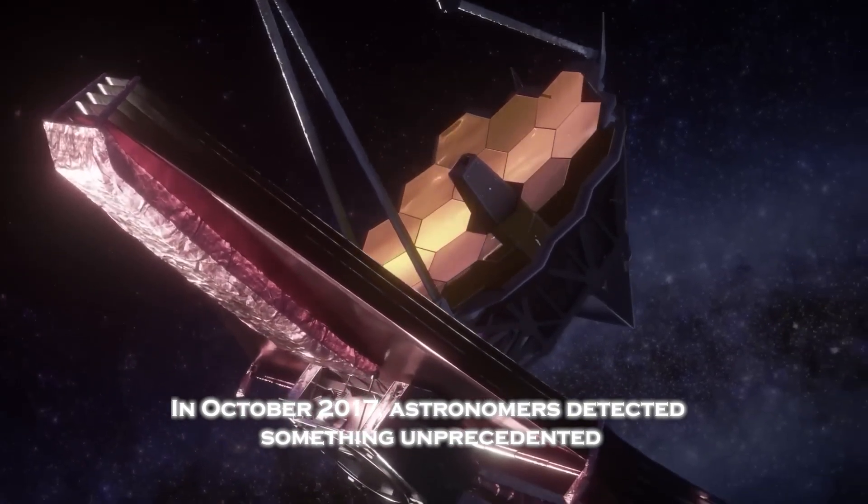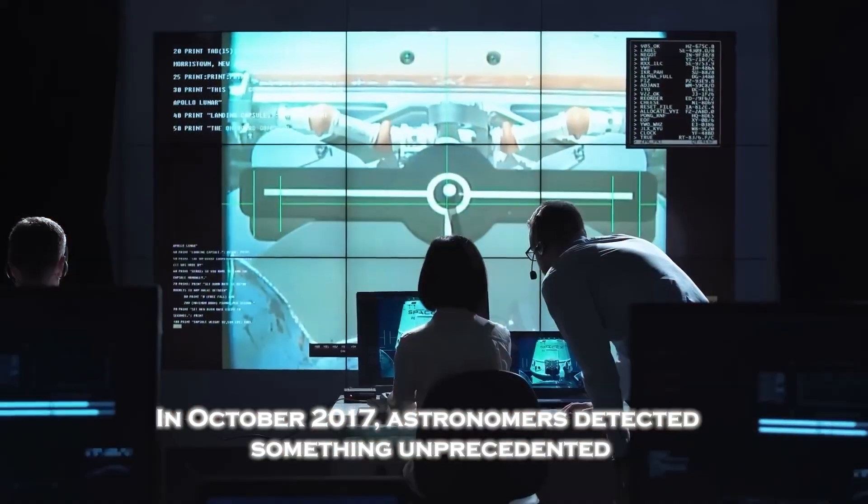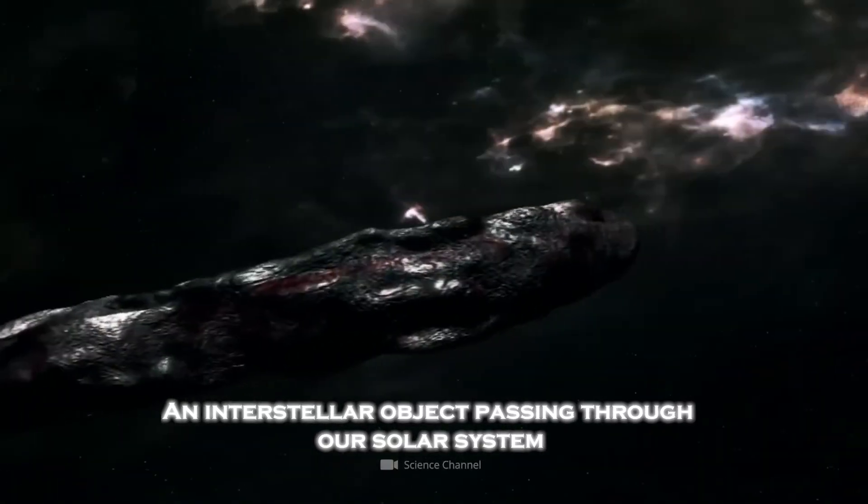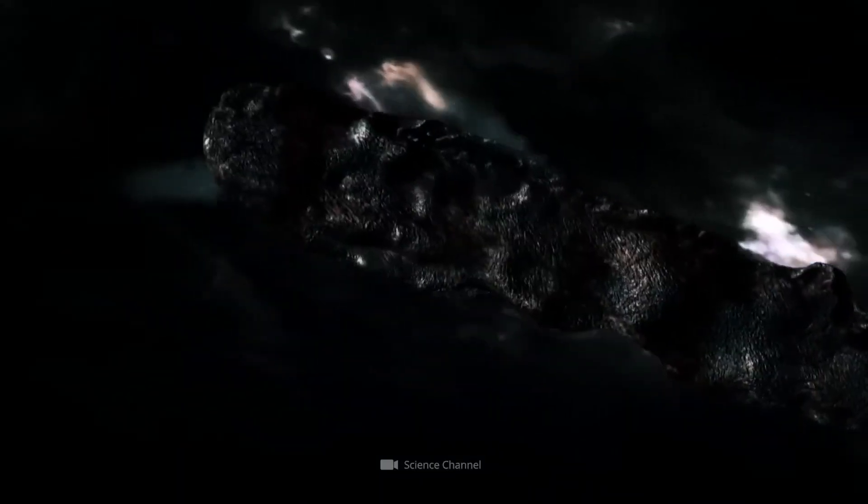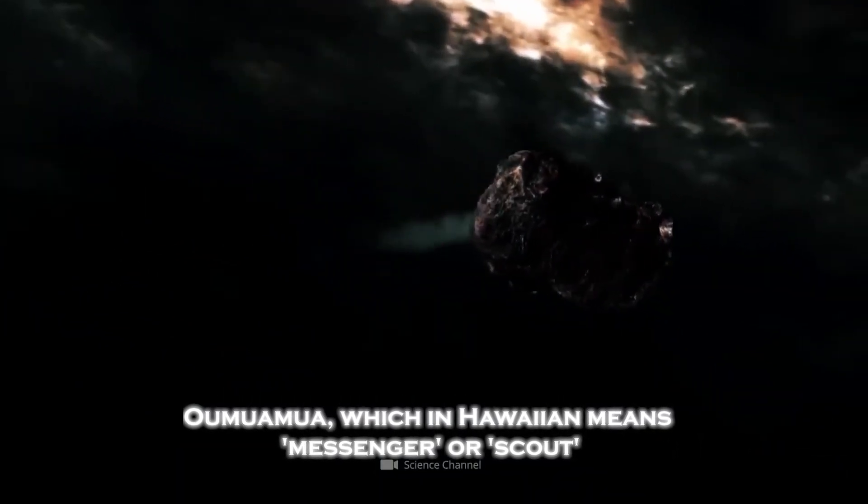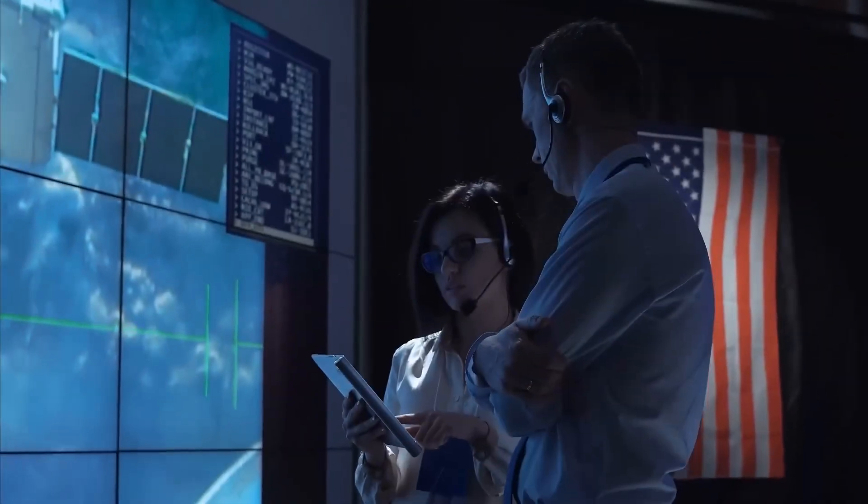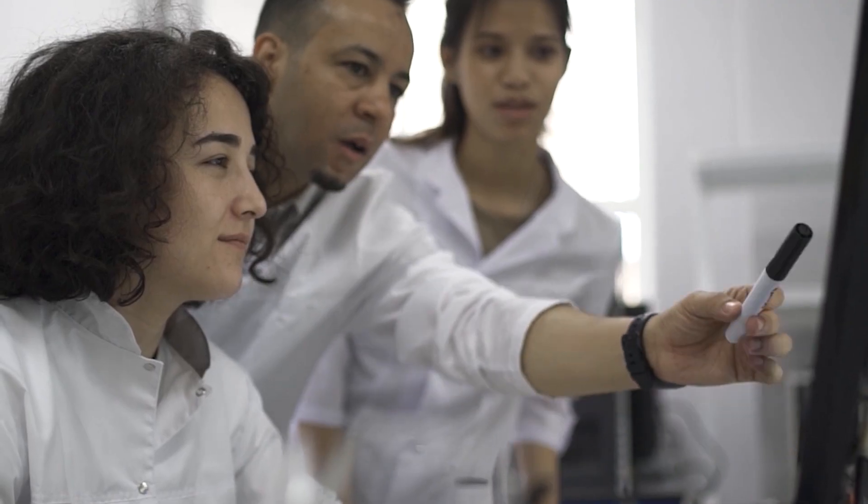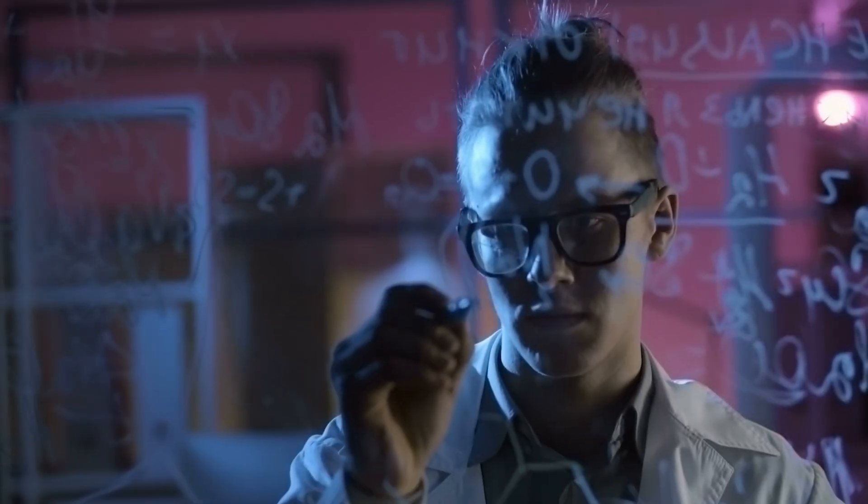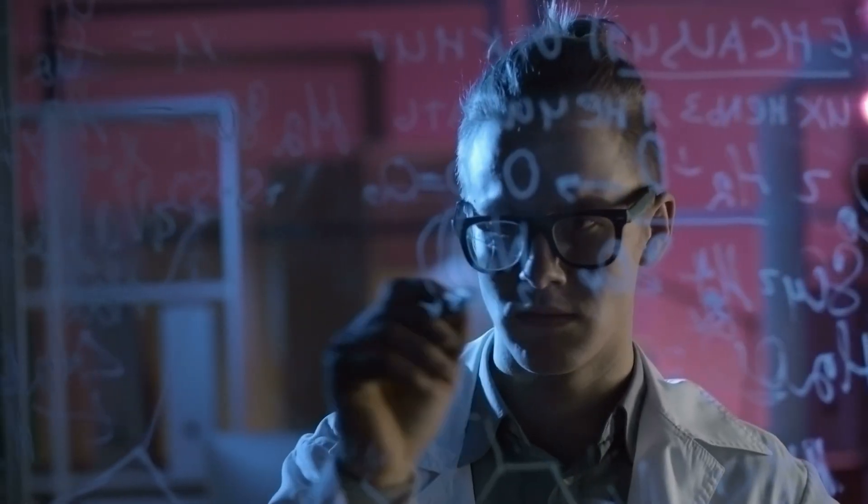In October 2017, astronomers detected something unprecedented: an interstellar object passing through our solar system. They named it Oumuamua, which in Hawaiian means messenger or scout. Since then, it has been the subject of intense scientific debate and speculation. Its trajectory, its elongated shape, and inexplicable behavior made it one of the greatest enigmas of modern astronomy.